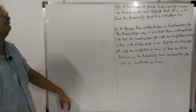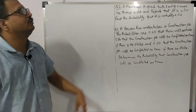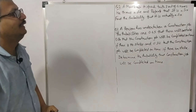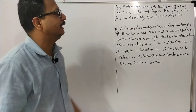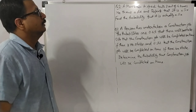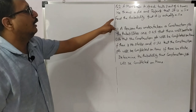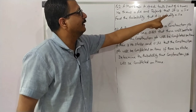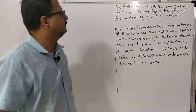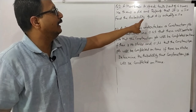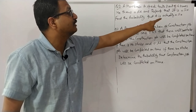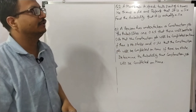Question number 2: A man is known to speak truth 3 out of 4 times. He throws a die and reports that it is a 6. Find the probability that it actually is a 6.